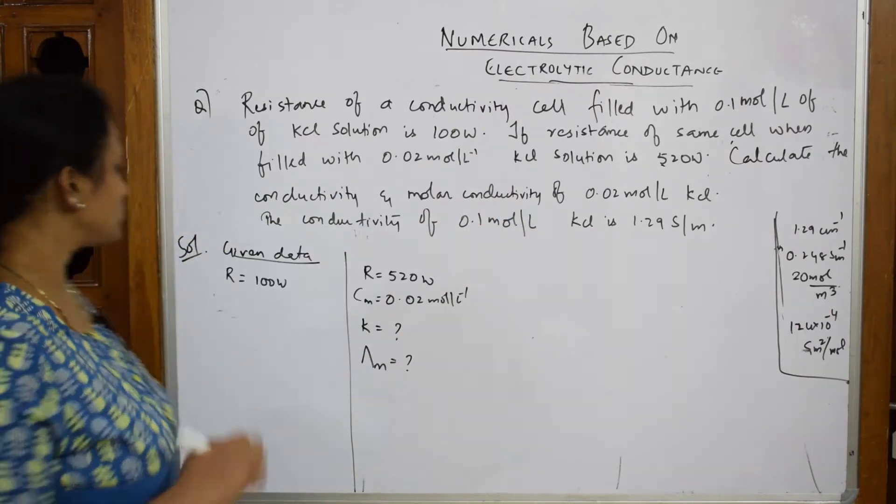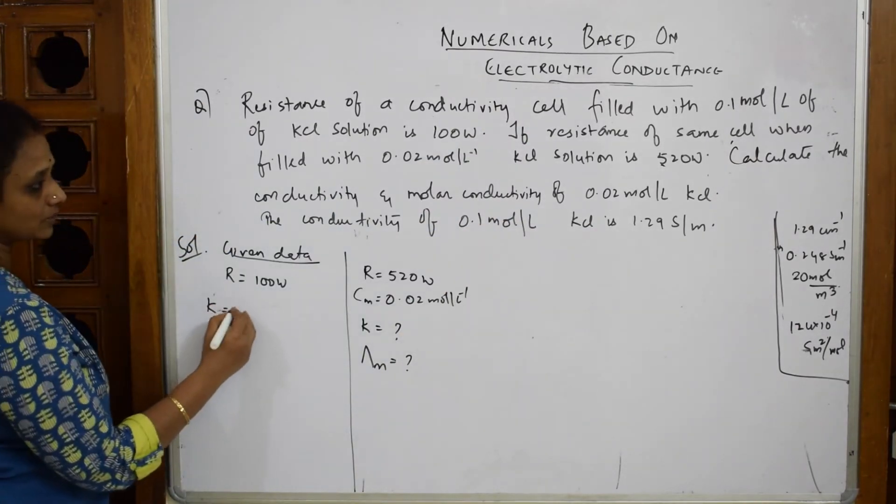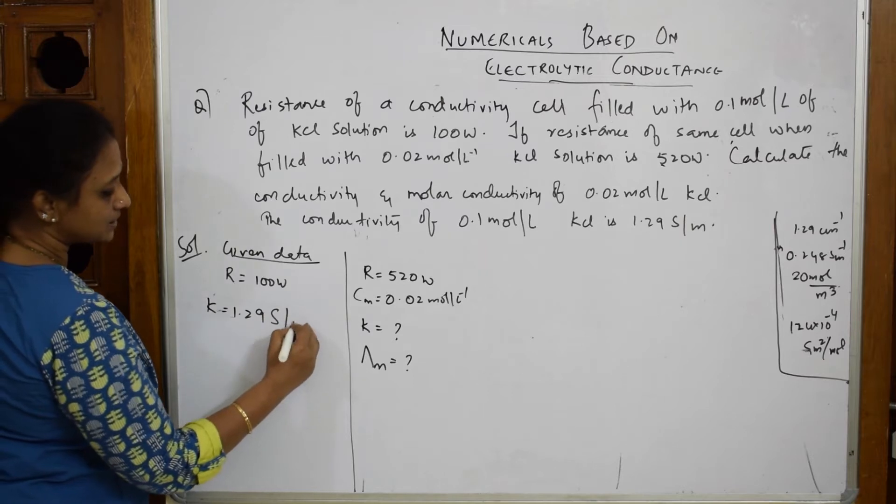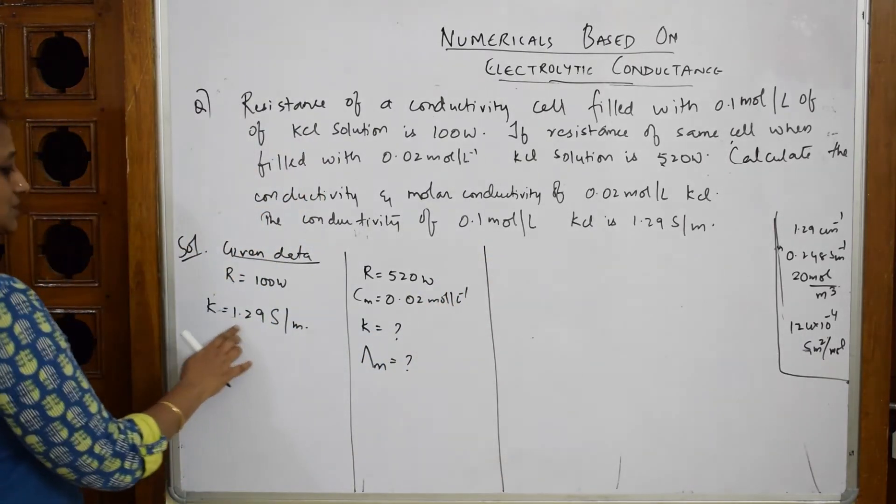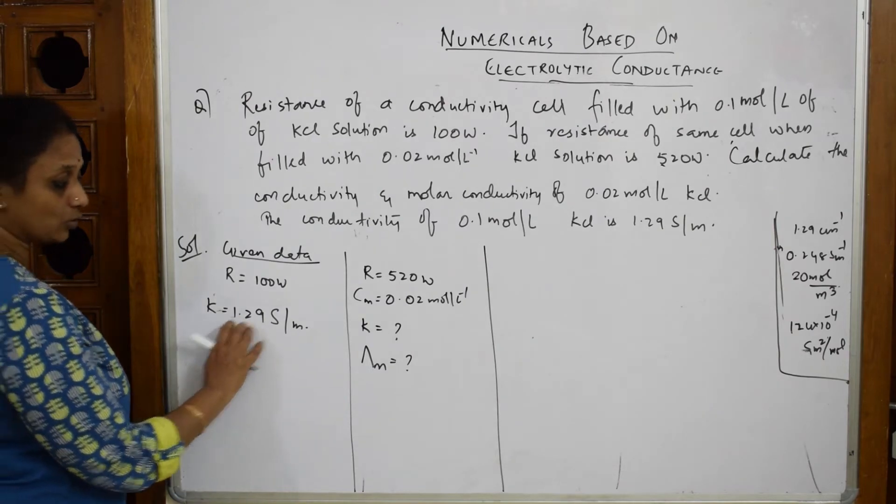The conductivity of 0.1 molar KCl is given as K = 0.129 Siemens per meter. Let's start with the first cell, then go to the second cell, and finally calculate molar conductivity.